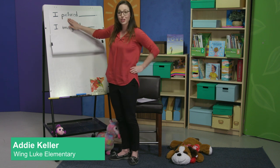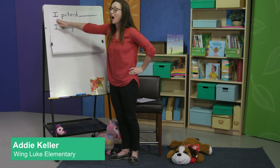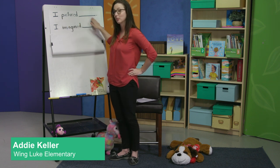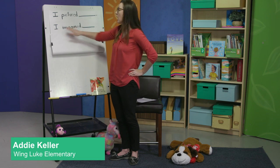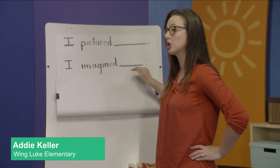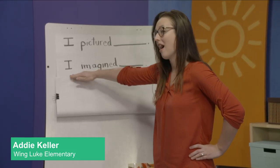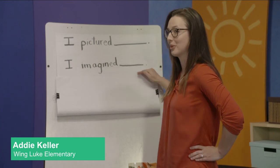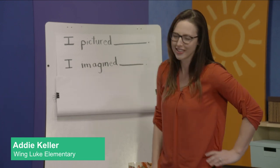Our two sentence stems are: "I pictured blank" — try that with me now: I pictured blank. Or "I imagined blank" — try it with me now: I imagined blank. Great.